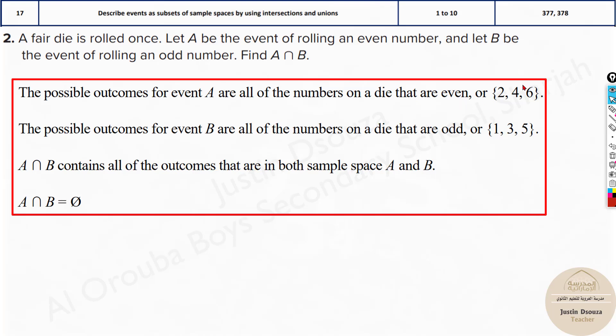So we can write the sample space of A as 2, 4, 6. B is 1, 3, 5 and none of them are common. So we use the null set symbol phi. This is how we write it. And you can just write empty set or null set as well or the symbol. It's fine.